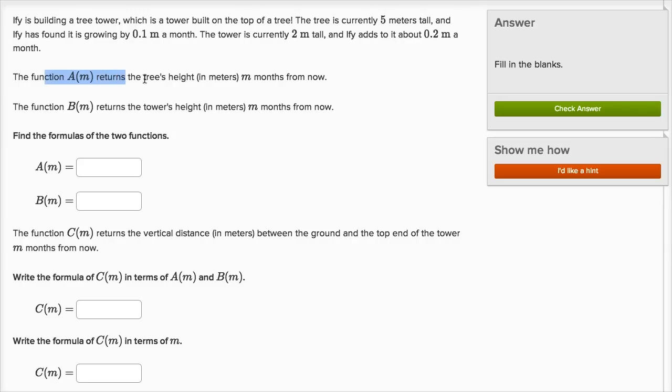The function A of m returns the tree's height in meters m months from now. The function B of m returns the tower's height in meters m months from now. Find the formula of the two functions.